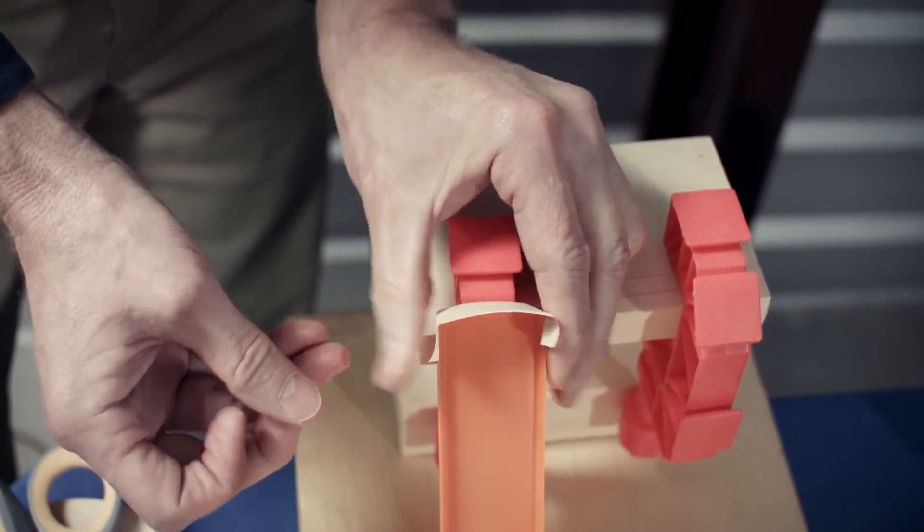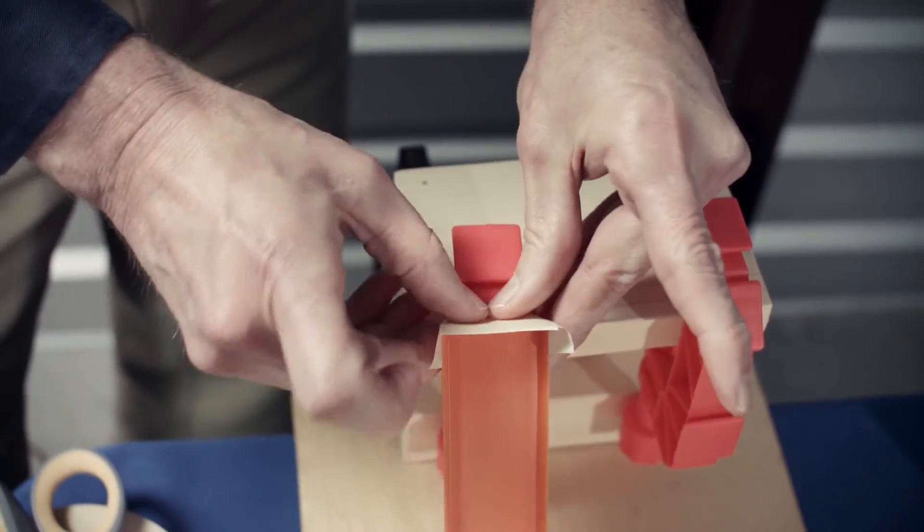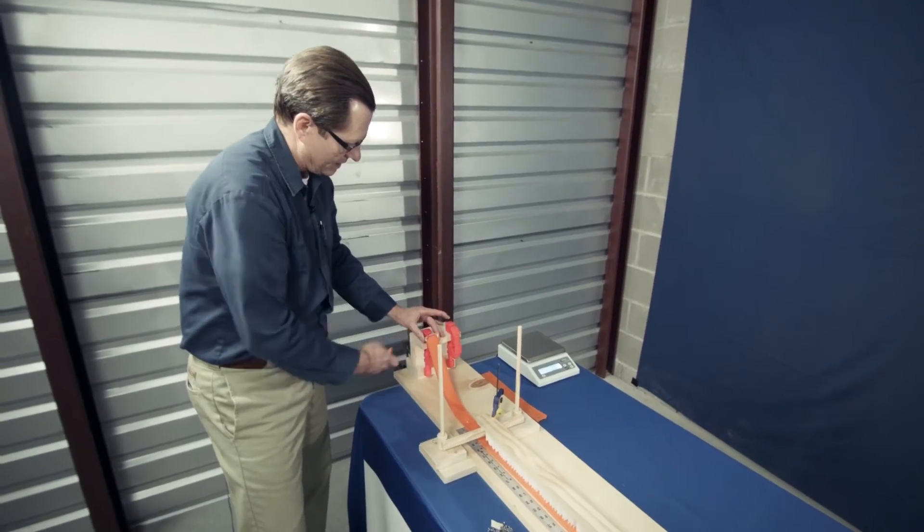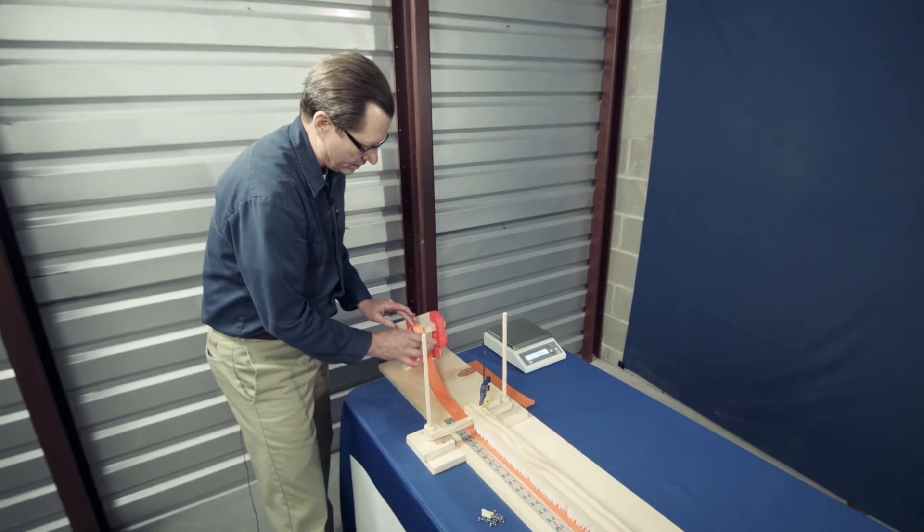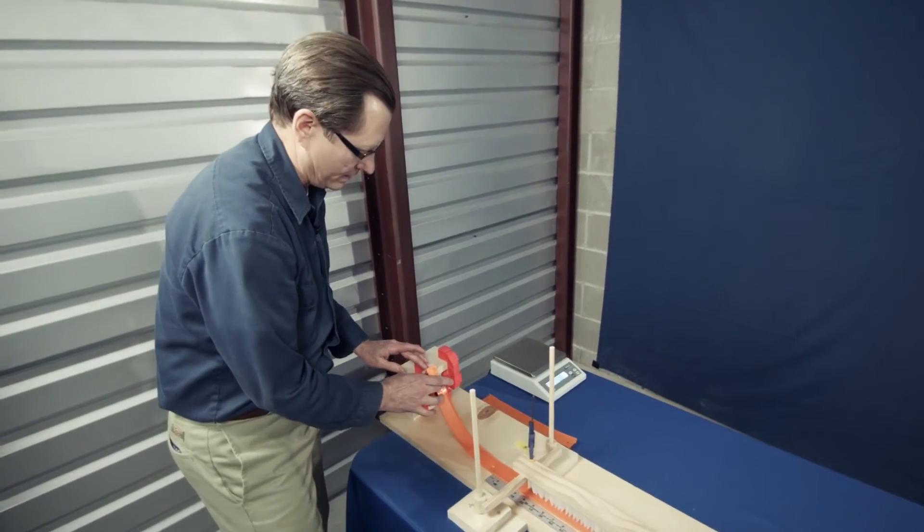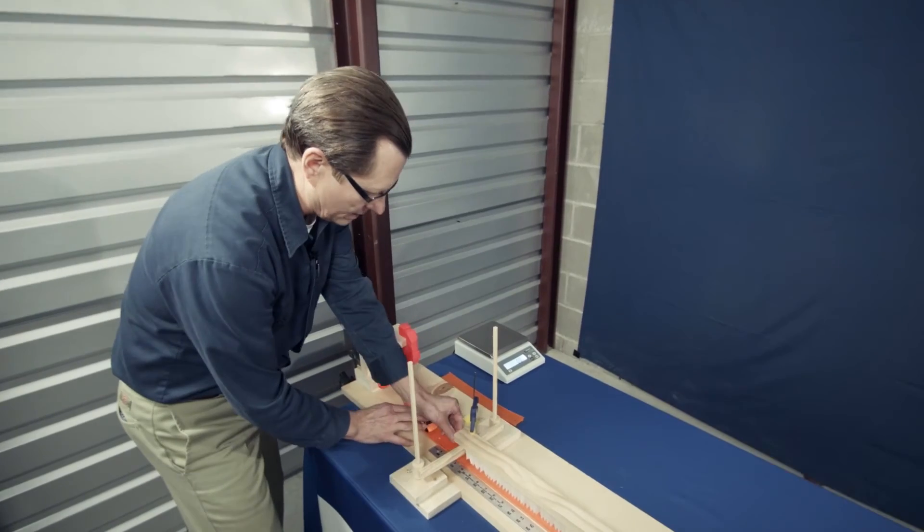At the top of the track, I've taped a piece of card across the top to act as a barrier so that I can always start the car from the same spot, so that we're always getting the same energy down at the bottom.